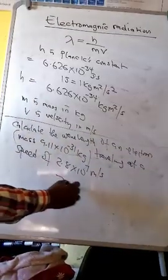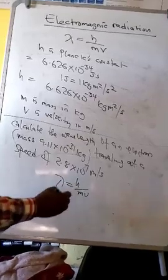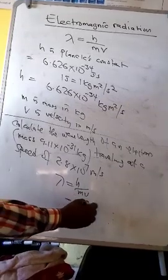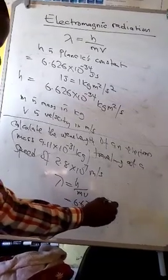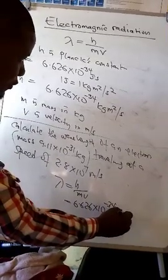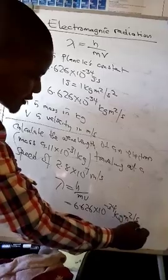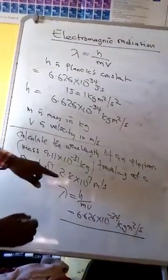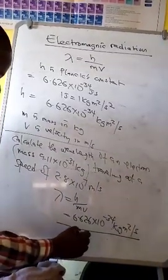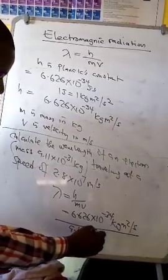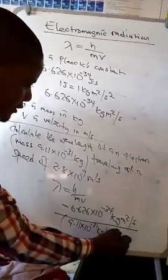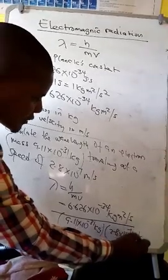So using De Broglie's equation, lambda equals h over mv. Our h is equal to 6.626 times 10 to the minus 34 kg meter squared per second, over mass which is 9.11 times 10 to the minus 31 kg, then speed 2.8 times 10 to the power 7 meters per second.